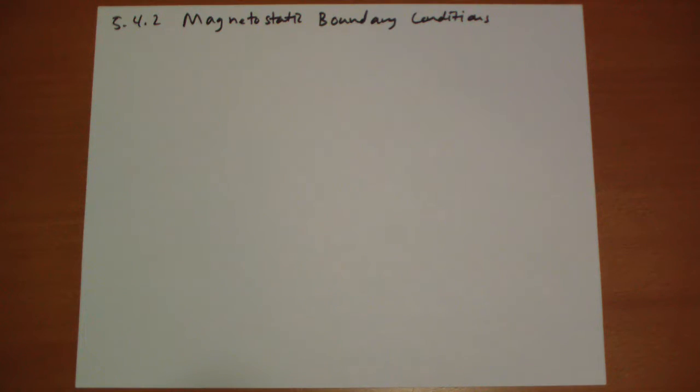Hi, this is Jonathan Gardner. This is section 5.4.2, part 2: Magnetostatic Boundary Conditions. I'm going to go fast. You can always rewind. Questions go in comments or video responses, and be sure to like and share with your friends.